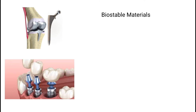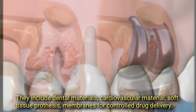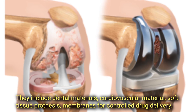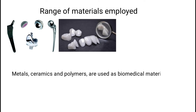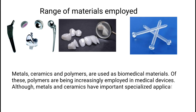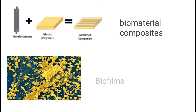Biostable materials are made for their resistance to breakdown in a biological environment. They can be subdivided into hard tissue replacements and soft tissue replacement applications. They include dental materials, cardiovascular materials, soft tissue prosthetics, and membranes for controlled drug delivery. The range of materials employed — metals, ceramics, and polymers — are used as biomedical materials. Of these, polymers are being increasingly employed in medical devices, although metals and ceramics have important specialized applications. Other materials employed include biomedical composites and biofilms.